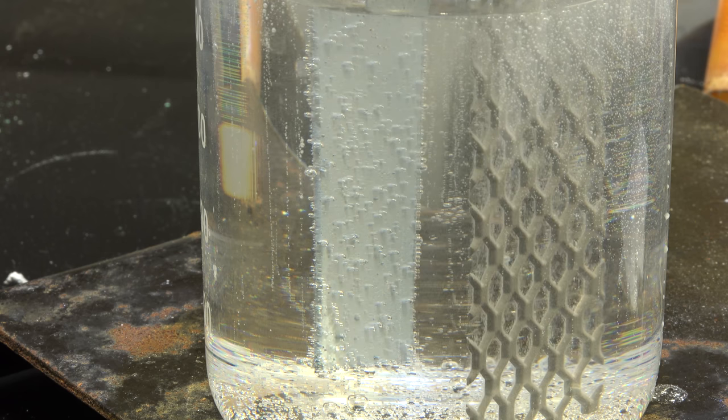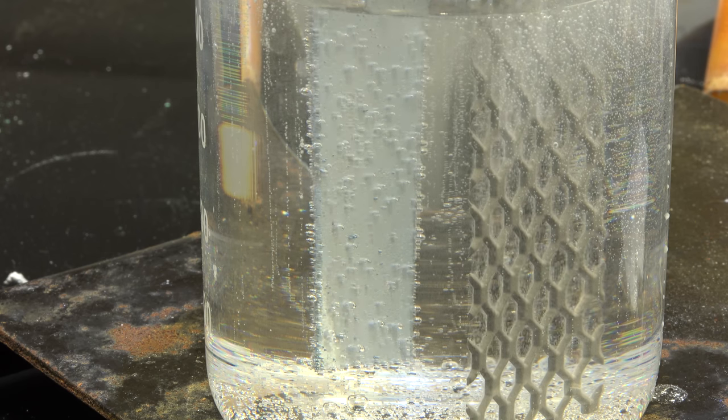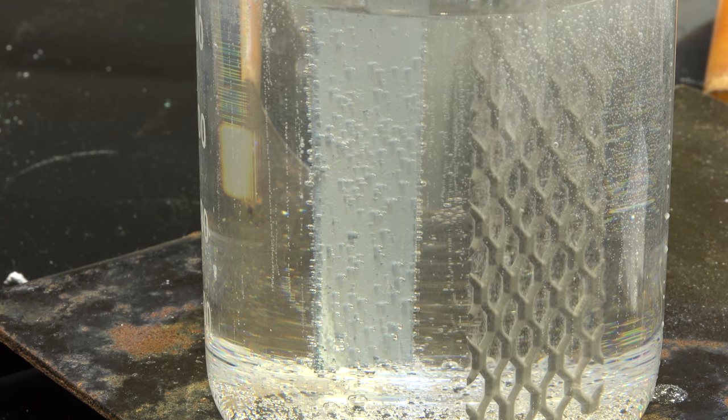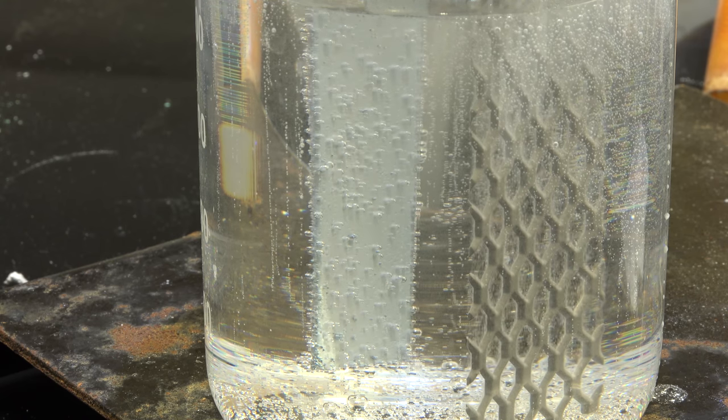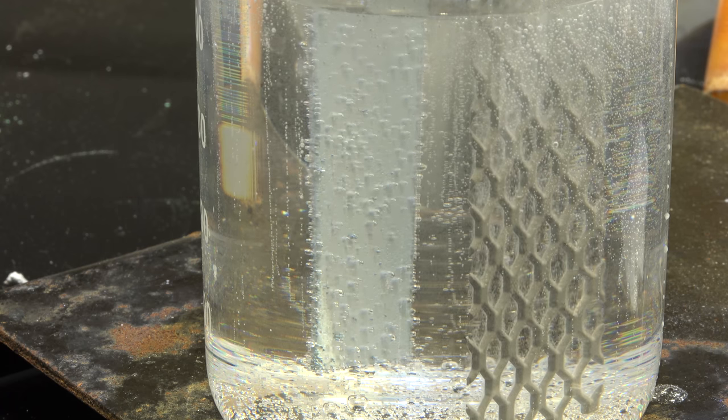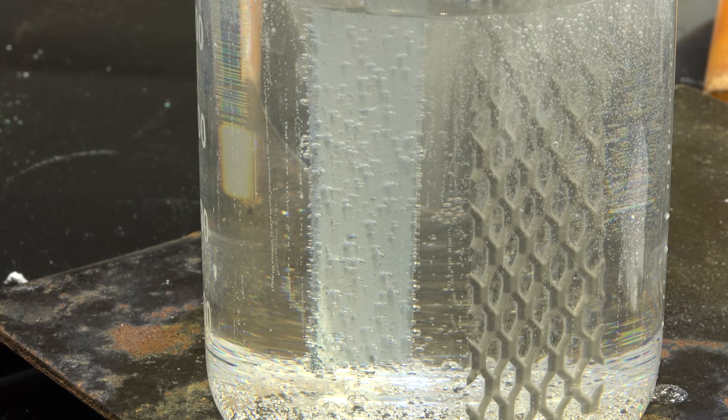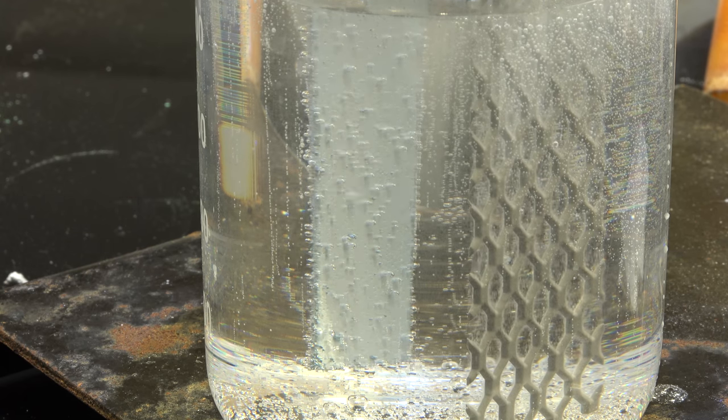Anyway, as we continue depositing zinc metal, we deplete the solution of zinc and raise the acidity. Eventually the zinc concentration will become too low to continue depositing and the concentration of acid will be high enough that hydrogen generation becomes a dominant reaction. You can see the cathode starting to bubble here.